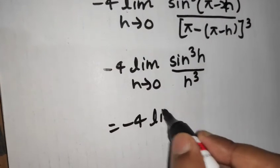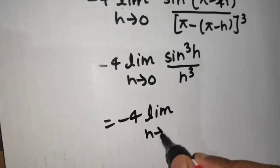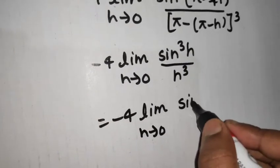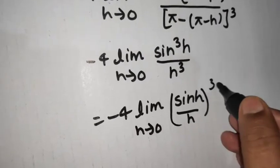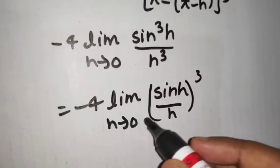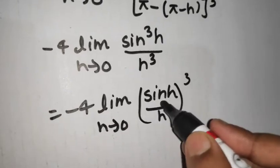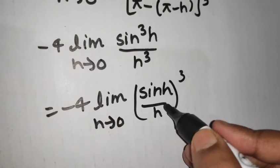So minus 4 times limit h tending to 0. You can write this as sin h by h whole cube and you know how to play with this because at h tending to 0 sin h by h is giving you 1.